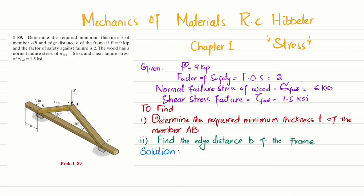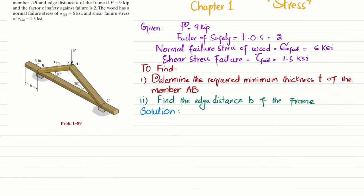You can see this is member AB and the thickness is not known. We have to find this thickness T and the edge distance B. The load acting on this frame is P which is 9 kips. The normal failure stress is 6 ksi and shear failure stress is 1.5 ksi. So we have to determine thickness T and distance B. Let's start with the solution.